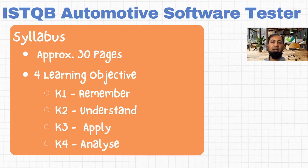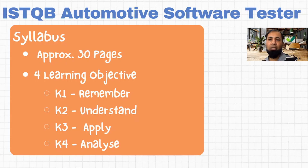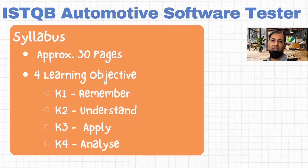K4 is the last cognitive level — you must be able to analyze a particular situation or scenario and suggest the best possible solution. It's very important to focus on these four learning objectives while going through the content. This will help you understand how much time you need to spend on each paragraph or chapter of the syllabus.